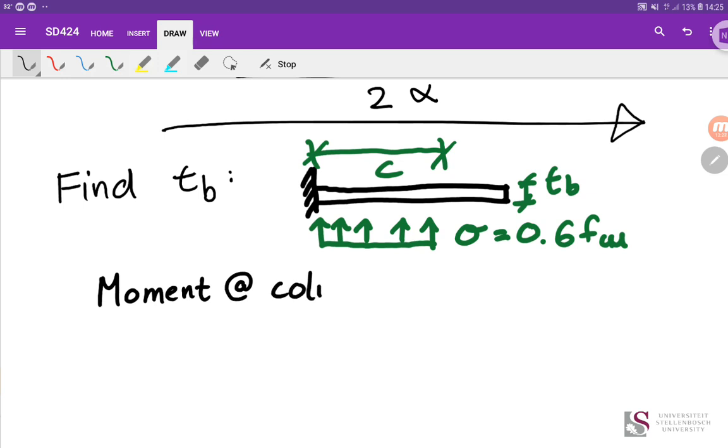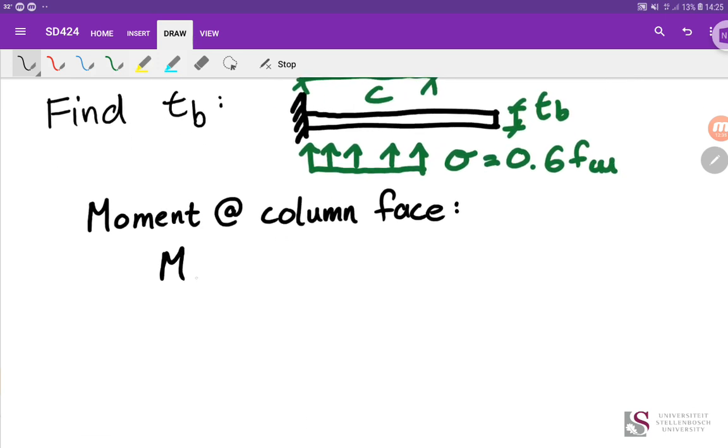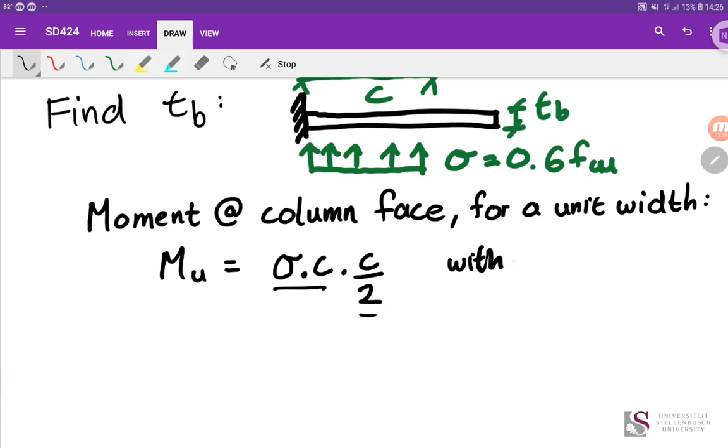And once again this load is applied over some distance. And we now need to find what is the thickness of the base plate. So I'm modeling either the left or the right. I've drawn the right hand side of section AA above. And from this, what I can now do is find the moment at the column face. Moment at column face. And this is force times distance. Where the force is simply the stress times C. Sorry, this is for a unit width. Because it could be almost any distance, any width that we are dealing with. So we're going to just deal with a width of one.